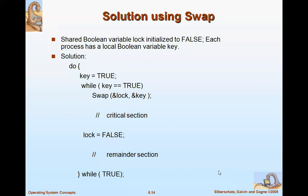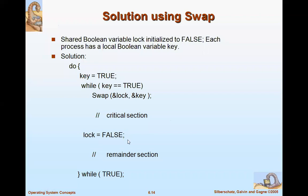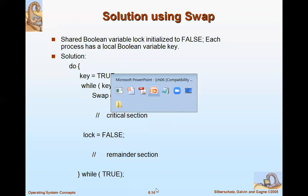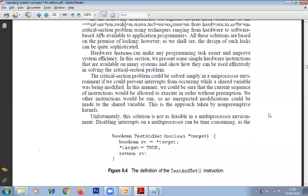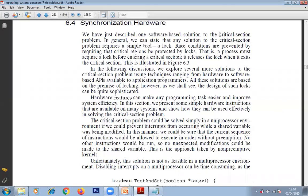Once the lock becomes true, the process has acquired the lock and is a genuine process allowed to enter the critical section. It finishes its task, comes out of the loop, sets lock back to false, and handles the remainder section if needed. This is the hardware-based solution for implementing critical sections.